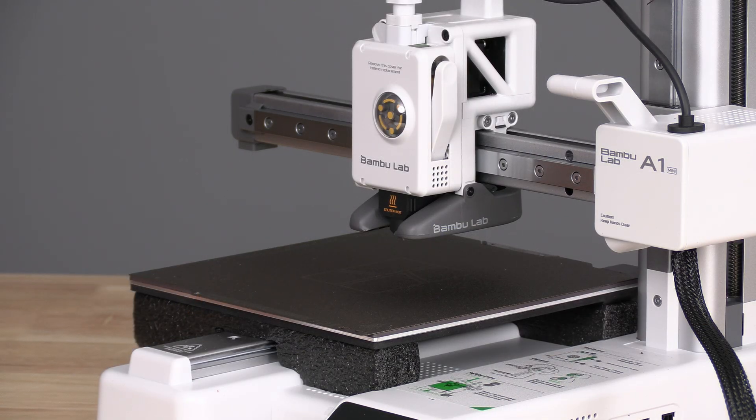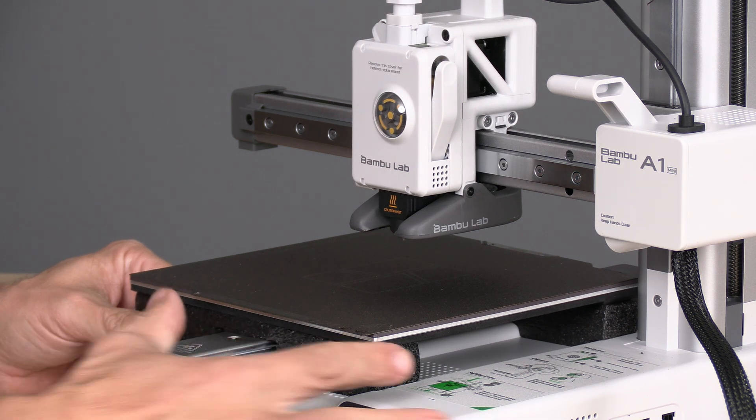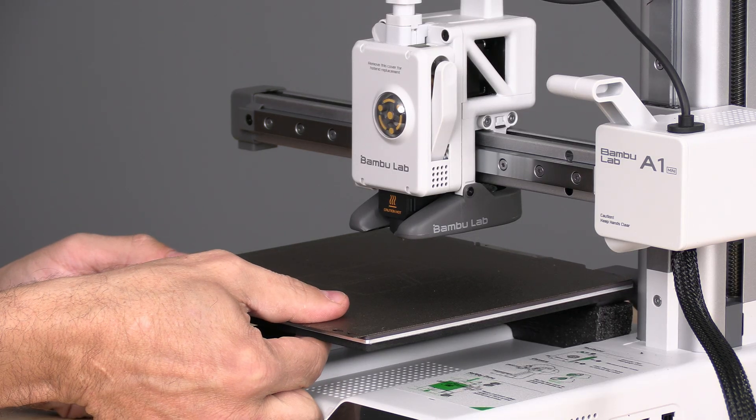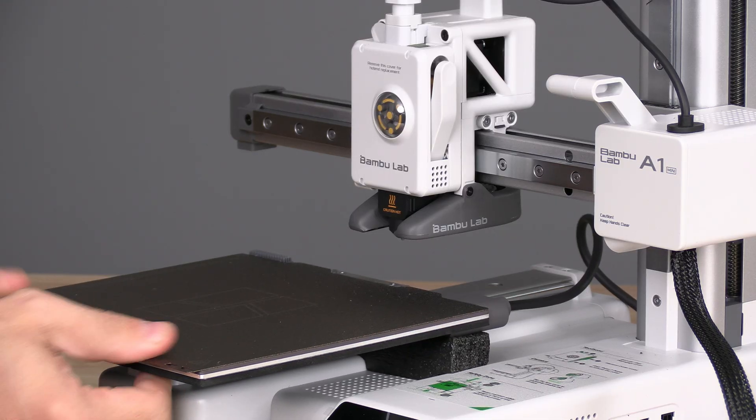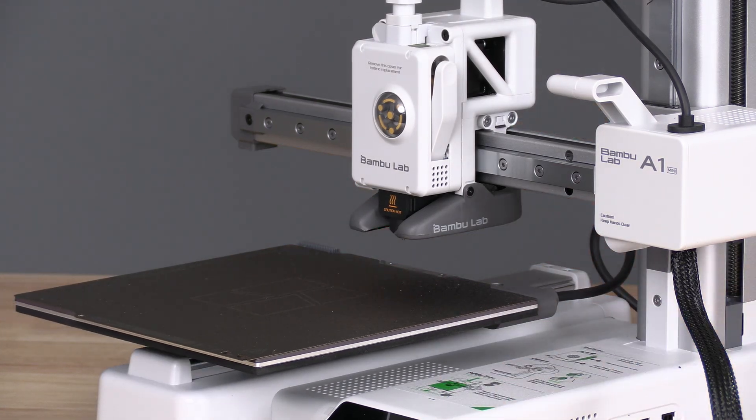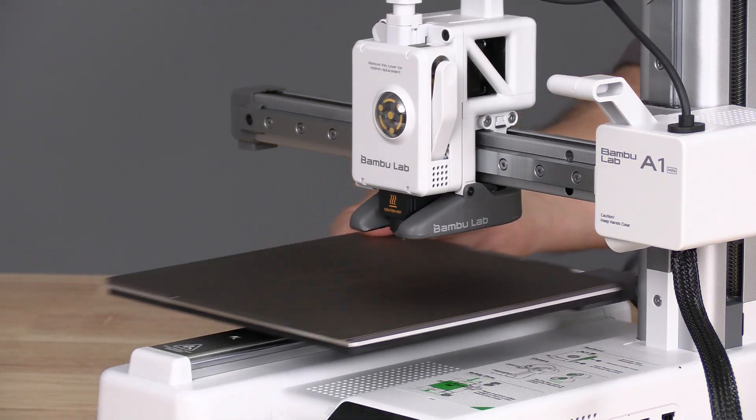Here under the build plate, you'll spot two more pieces of foam. Grab this piece of foam and work it forward. Gently pinch the build plate and slide it forward. And work out that remaining piece of foam. Your print bed is now free.